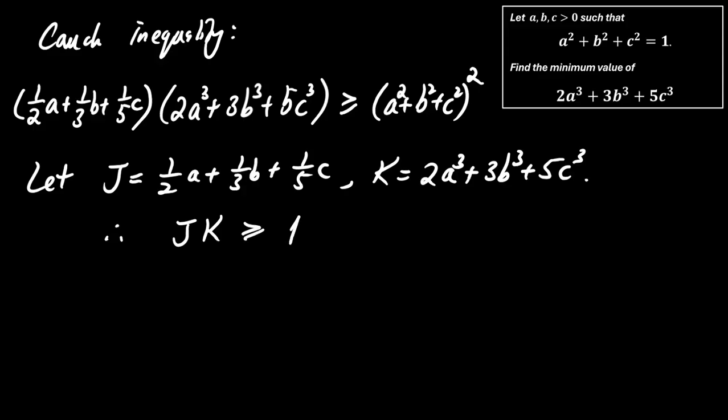So we now have J times K is greater than or equal to 1. Therefore, K is at least 1 divided by J. To minimize K, we now aim to maximize J.